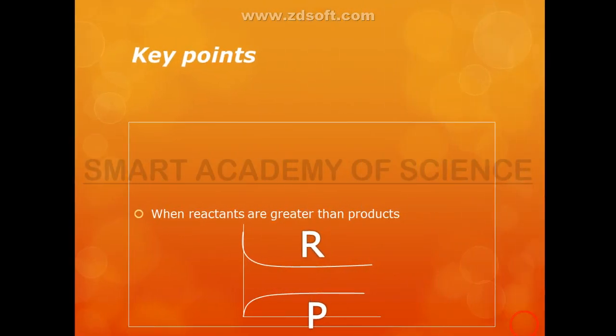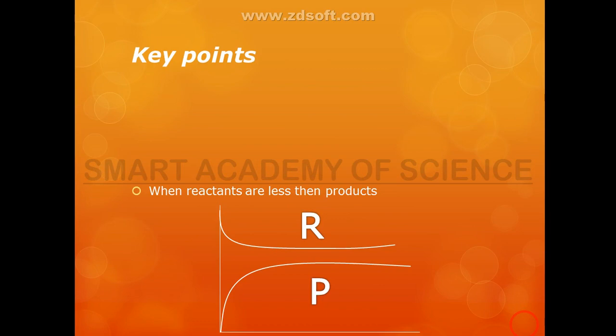Key point number 2: when reactants are greater than products, the reaction proceeds forward. Key point number 3: when reactants are less than products, the reaction proceeds in the reverse direction.